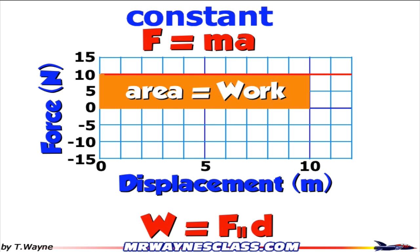So area is equal to work. The area bounded by the curve and the axis is equal to the work. And then left and right sides are bounded by the displacement. So the area bounded by the curve and the axis is equal to the work.